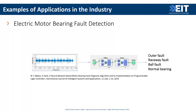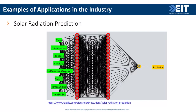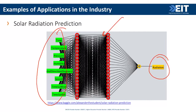Another case study: detecting faults in electric motors — specifically bearing faults — using vibration data as input and fault type as output, also using neural networks, with very good results. Another example: forecasting electricity demand in Spain, where available historical data lets you build a system to predict future consumption. In another case, a neural network was used to predict solar radiation given various inputs.